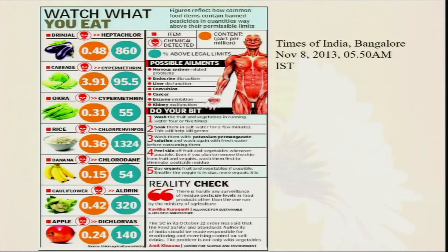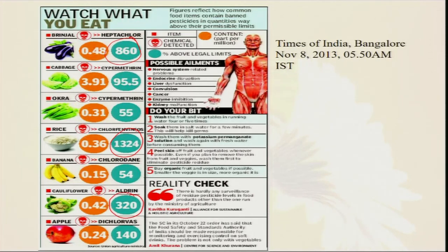In different types of food we are taking, sometimes lots of pesticide residue is loaded — sometimes more than the safe limit. For example, in case of brinjal, heptachlor residue is 860 percent more than allowed. Similarly, in rice there is a pesticide residue of 1324 percent. In cauliflower, aldrin residue is more than 320 percent. Whenever we consume this pesticide-loaded food, there will be problems with our health. Always we have to take care that the quality of food is not only quantity but also quality.